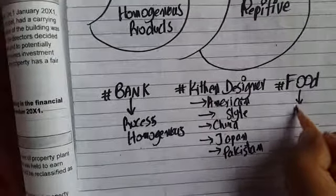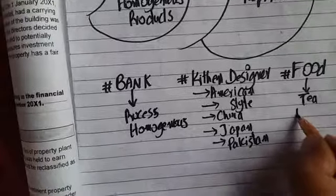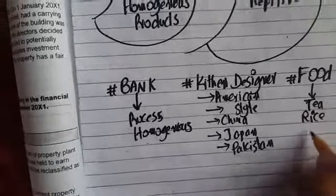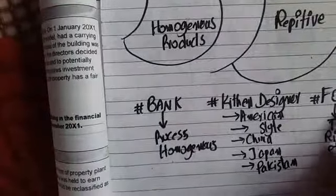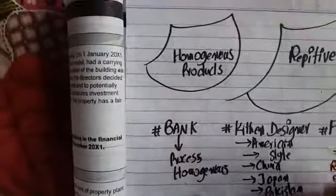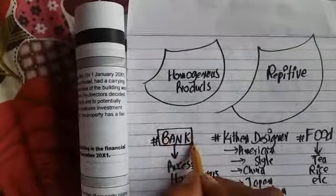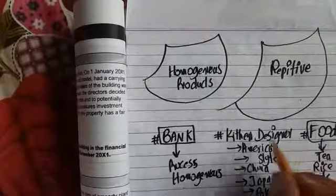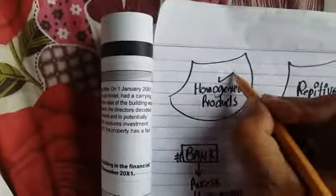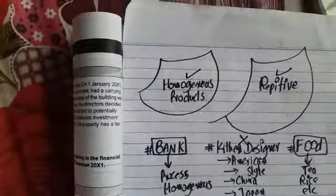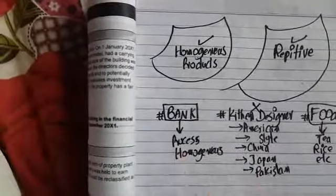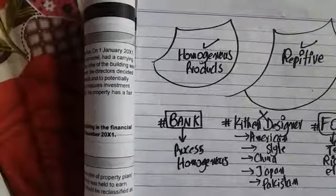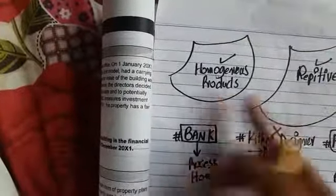For food manufacturers producing tea, rice, etc., the same product is prepared repeatedly each day — so the work is repetitive. Therefore, standard cost can be used for a bank and for food manufacturing, but not for kitchen design, because kitchen design is not homogenous and the work is not repetitive. In your exam questions, identify whether products are homogenous and work is repetitive.